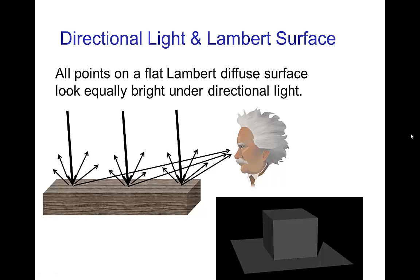All of those points on a flat Lambert surface look equally bright. Not only does a single spot look the same when you move your viewpoint, but in this case with a directional light, the entire flat surface has the same brightness for this type of Lambert diffuse surface.